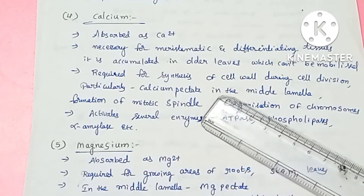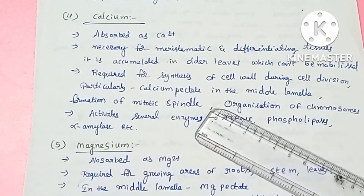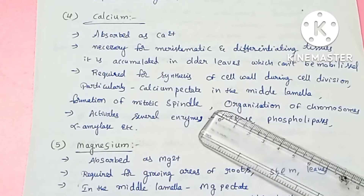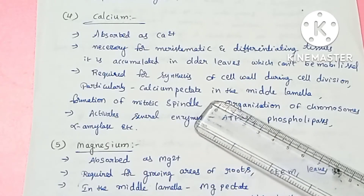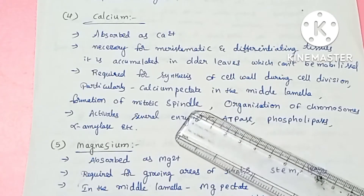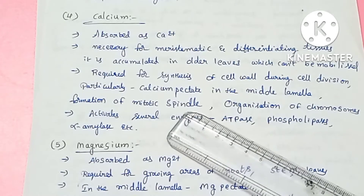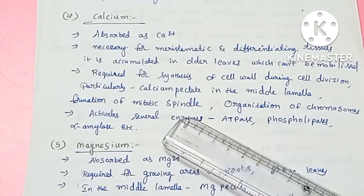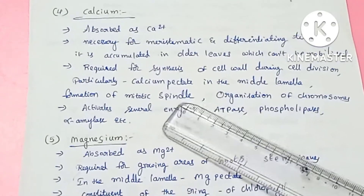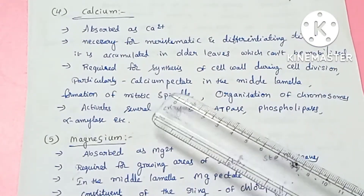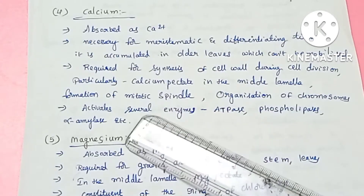Calcium is required for the synthesis of the cell wall. In the middle lamella region of the cell wall, there is calcium pectate, where calcium and magnesium pectates are present.